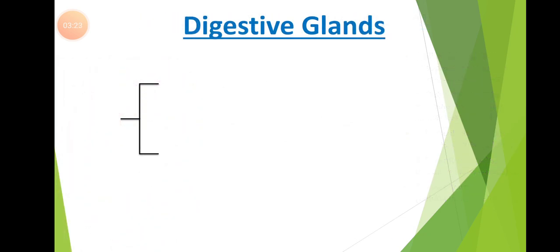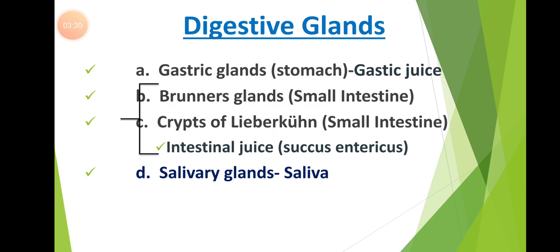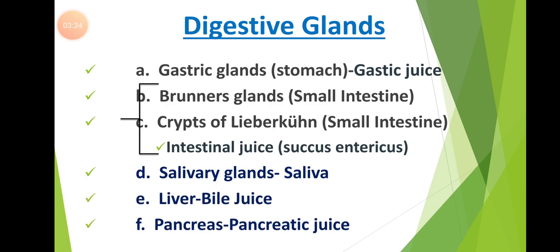Coming to the digestive glands: gastric glands, Brunner's glands, crypts of Lieberkühn, salivary glands, liver, and pancreas — they all constitute the digestive glands. The Brunner's glands and crypts of Lieberkühn are present in the walls of the small intestine, and their secretions are called intestinal juice, also called succus entericus. The gastric glands, present in the walls of the stomach, secrete gastric juice. Salivary glands secrete saliva, liver secretes bile juice, and pancreas secretes pancreatic juice.